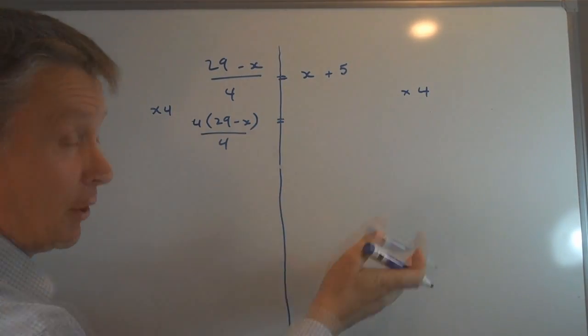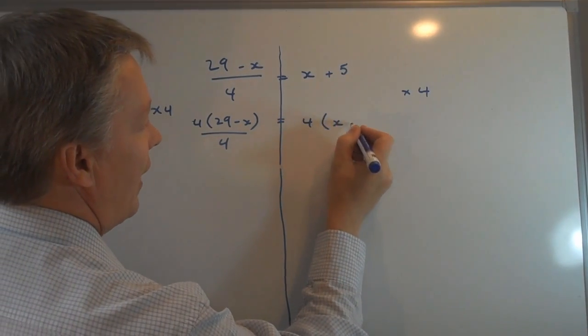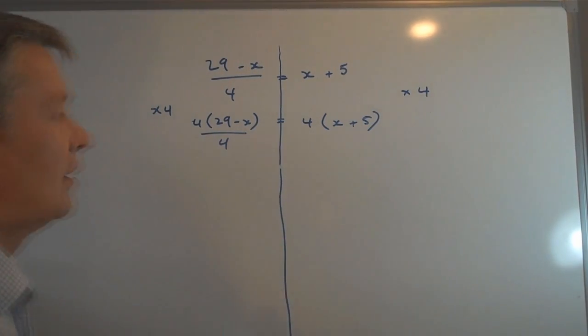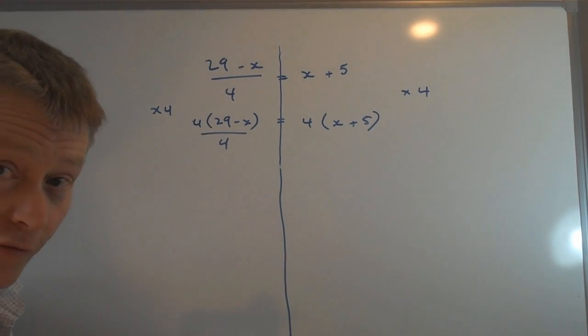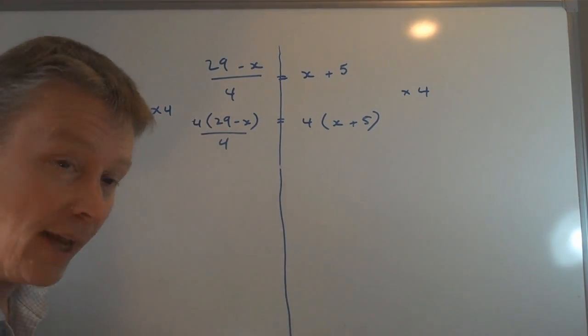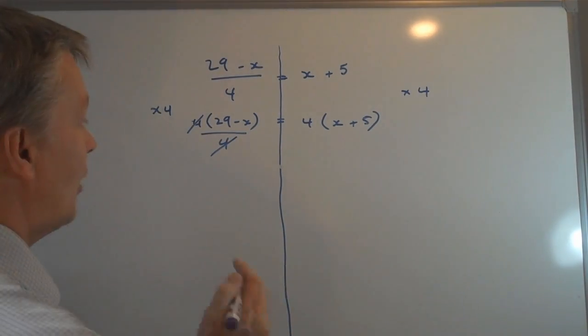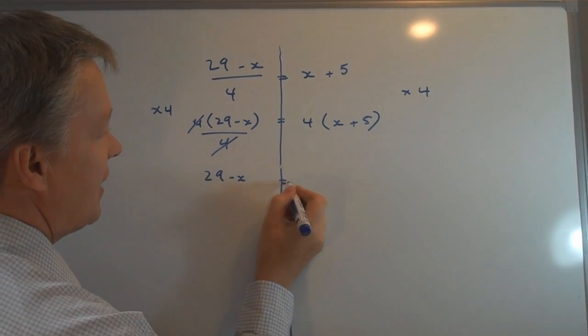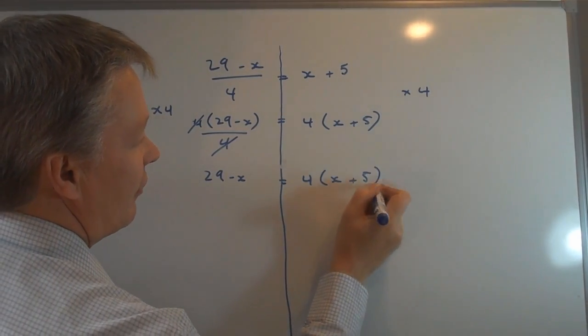On this side, I'm going to multiply it by 4. So it will be 4(x + 5). What I wanted to do was to get rid of this division by 4. So in order to do that, I've multiplied by 4, which will allow me then to cancel these two 4s out. So I'm left with 29 - x = 4(x + 5).